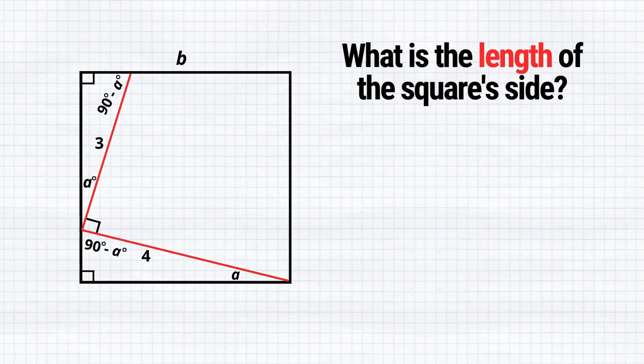But how does this help us to find out the length of the square side? Well, let's indicate the shorter side of this triangle as C. Since the entire side of the square is equal to B, this part will be B minus C.